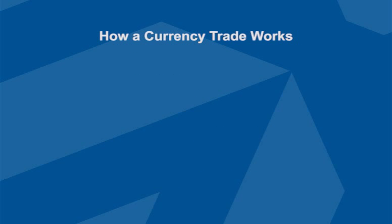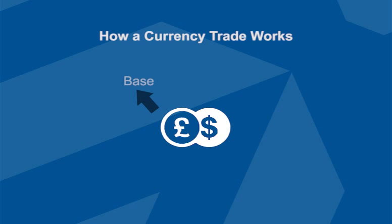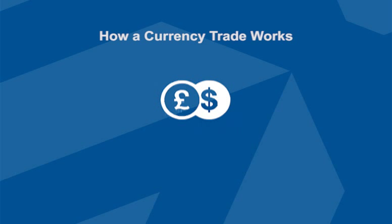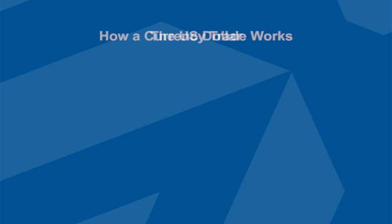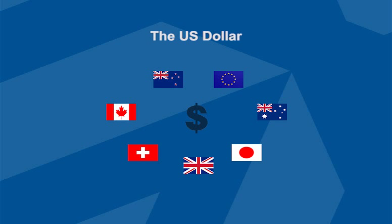You may be wondering how a currency trade actually works. Taking the GBP/USD as an example: the first listed currency, GBP, is the base currency, and the second listed currency, the US Dollar, is the quote currency. So if I placed an order to buy the GBP/USD, I would be buying the UK Sterling and selling the US Dollar. The US Dollar is one half of every major currency pair and constitutes around 75% of all FX trades.